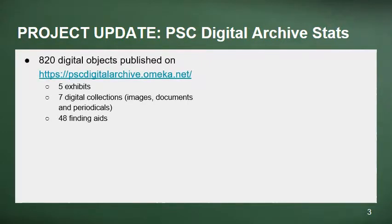The student assistants and I started digitizing items from the archival collections in the spring semester of 2016, and as of October 27, 2017, I've been able to publish over 820 items on the digital archive website. The site includes five exhibits and seven digital collections, so you can view images, historical documents, student newspapers, newsletters, yearbooks, and 48 finding aids that describe the content of the library's archival holdings.